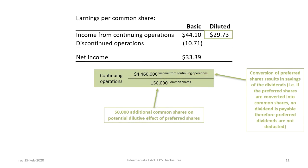Now we can move on to diluted earnings per share, which is calculated in the same order and same way as basic EPS, except we need to ensure that we have adjusted the number of common shares for any potential dilution. In this case, the data indicates there are 50,000 $1 cumulative preferred shares, which we will assume to be diluted for this illustration. Diluted EPS shows the worst-case scenario of the highest amount of dilution relating to any dilutive securities, which could include convertible bonds, convertible preferred shares like in this example, stock options, warrants, or rights.